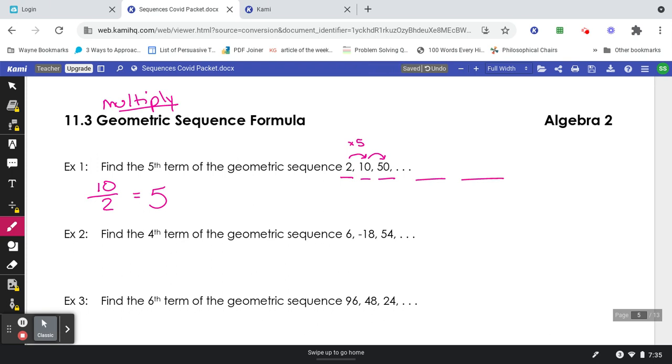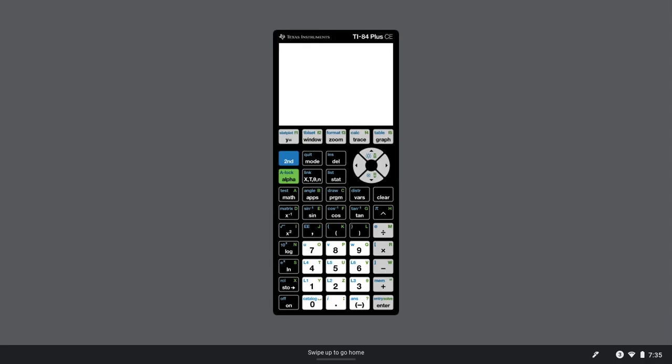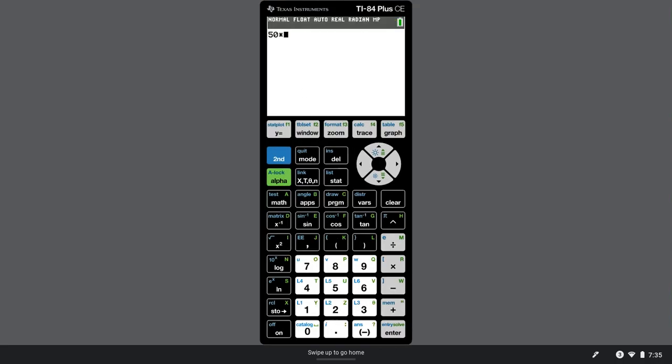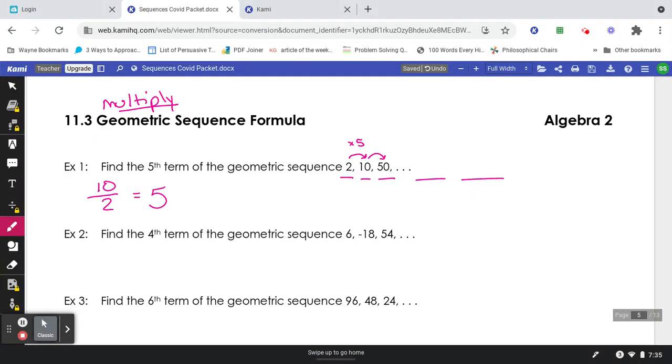I'm going to grab my calculator and just keep multiplying by 5. So 50 times 5, 250 times 5, 1250. So 250 and 1250.